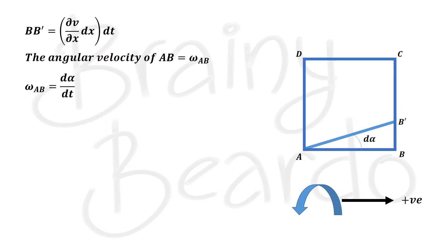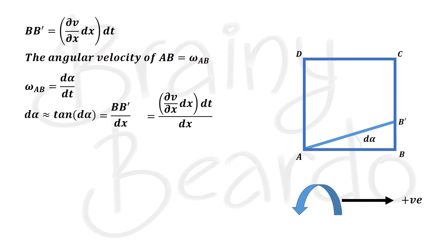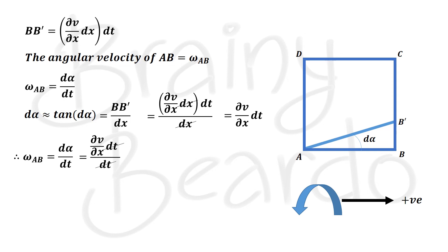Since the time interval dt is very small, the angle dα is also very small, so we can write dα = tan(dα). Now tan(dα) equals the opposite side divided by the adjacent side — that is, BB′ divided by dx. Substituting BB′ = (∂v/∂x)·dx·dt divided by dx, the dx terms cancel, giving dα = (∂v/∂x)·dt. Therefore ω_AB = (∂v/∂x)·dt / dt, and cancelling dt, we get ω_AB = ∂v/∂x.